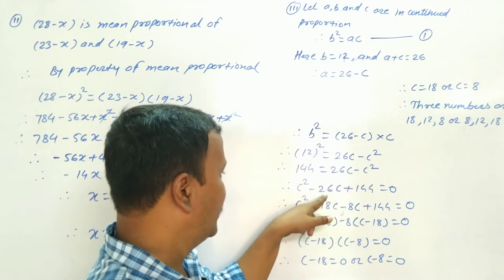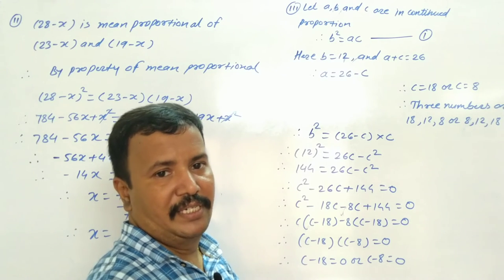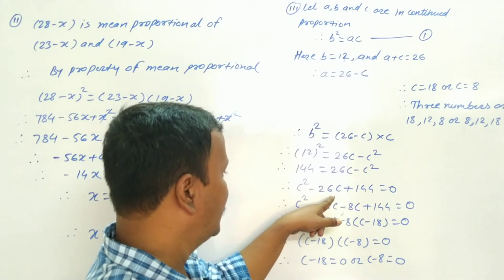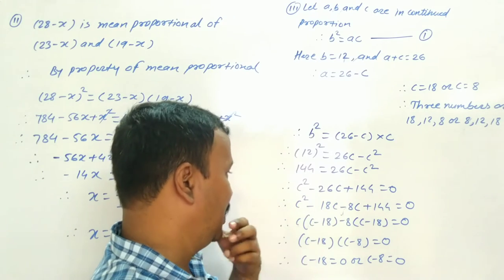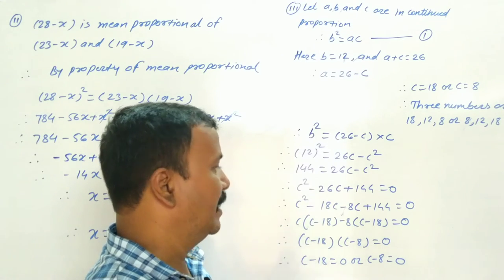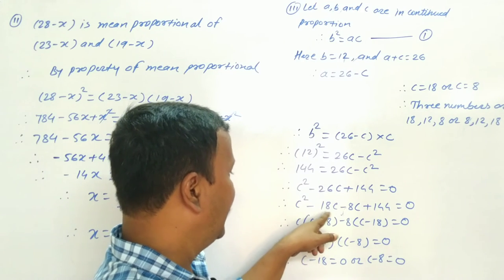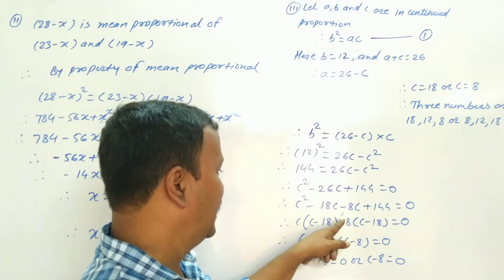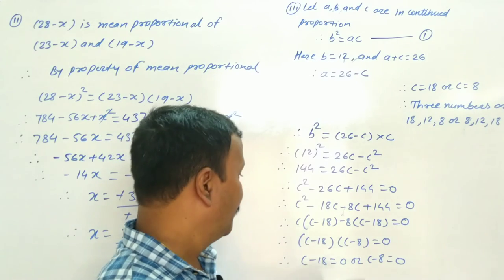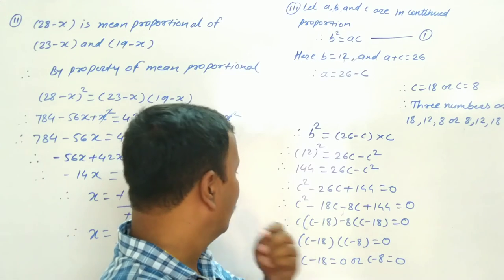Rearranging gives the quadratic equation: c squared minus 26c plus 144 equals 0. We need two numbers that add to 26 and multiply to 144 — those are 18 and 8. So: c squared minus 18c minus 8c plus 144 equals 0.